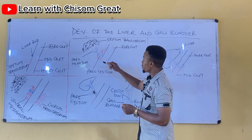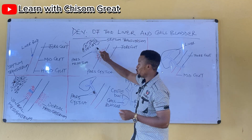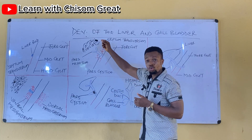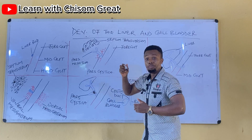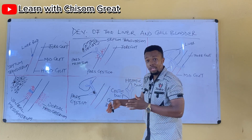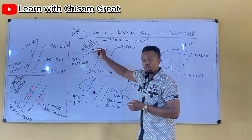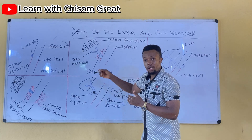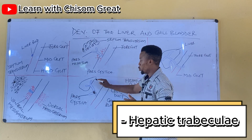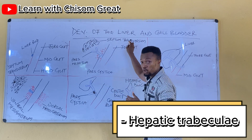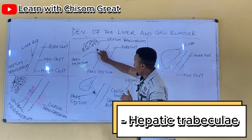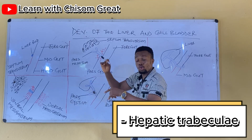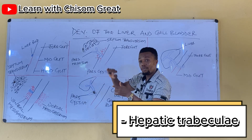As the pars hepatica is approaching the septum transversum and growing into it, some cells of the septum transversum begin to disintegrate. They begin to break down, and as they break down, they come together to form a structure known as the hepatic trabeculae, and eventually give rise to the liver.